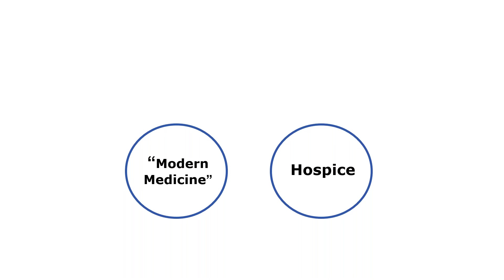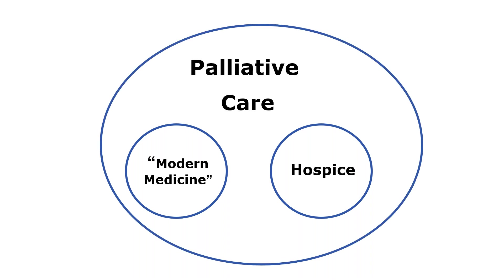Most of us understand modern medicine — the curative approach, trying to fix disease and make sure people are as comfortable as possible. The hospice model came out from the 1980s, where nearing the end of life we focus on comfort. Palliative care encompasses both, serving as the bridge between the two and making sure that people have all their needs met. Not all of modern medicine is palliative care; however, hospice is under the umbrella of palliative care itself.